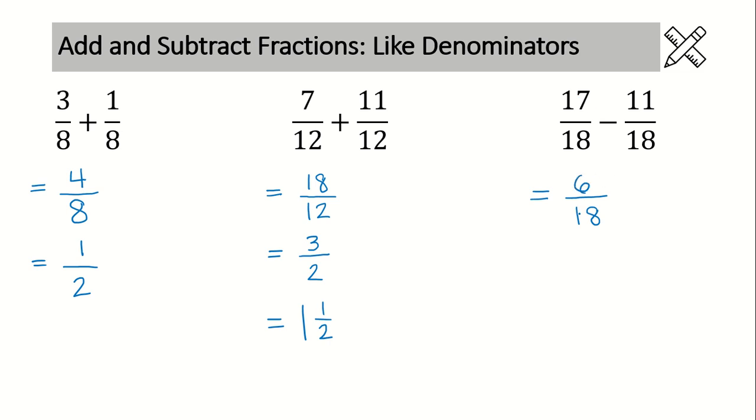Alright, again, and this happens often in fractions, we have the correct value, but it's not lowest terms. Both numerator and denominator can be divided by 6. So lowest terms is 1 3rd.